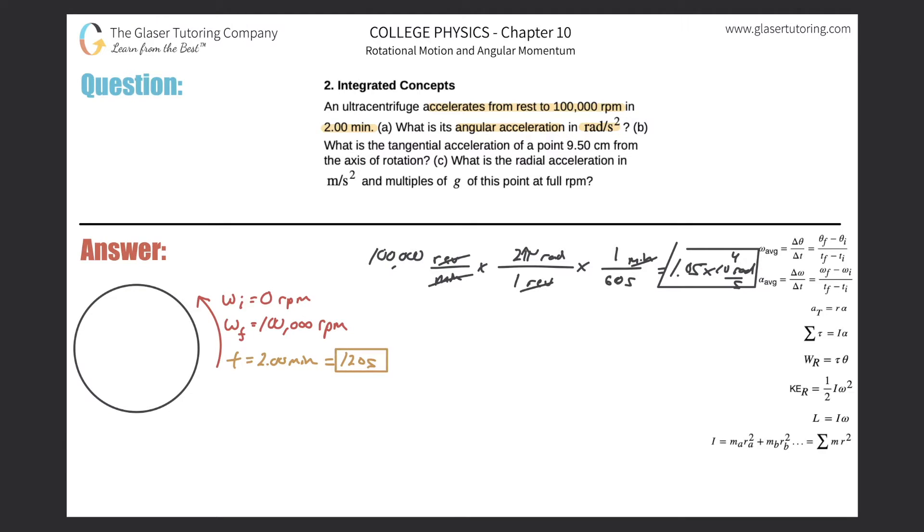Now, how do we find the angular acceleration? You should have this formula memorized. We're going to be using this formula over here, where the angular acceleration is equal to the change in angular velocity divided by the change in time.